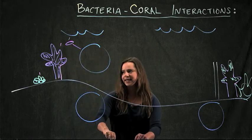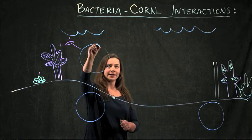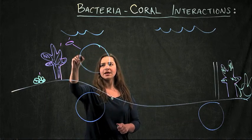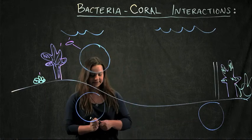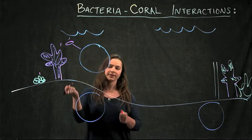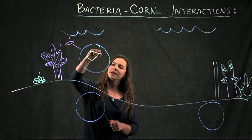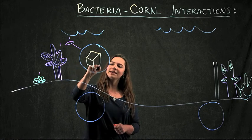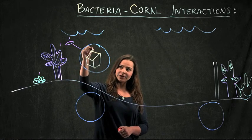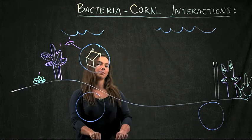Now, a vesicle is basically a tiny membrane sac that contains and protects a package. And of the many things that could be inside of this package, we could have signaling molecules.